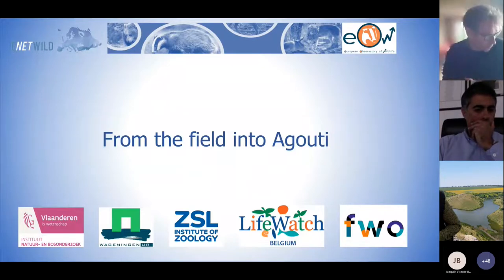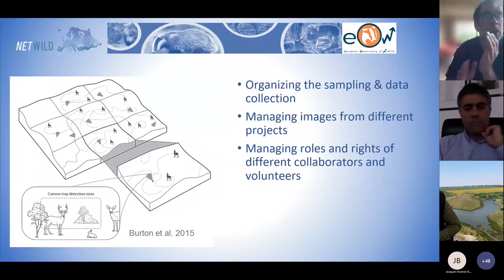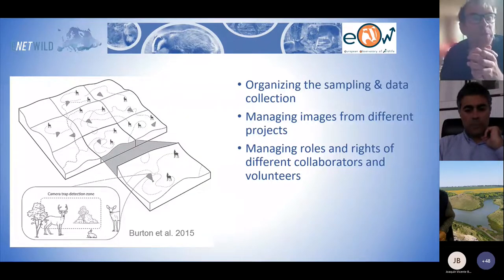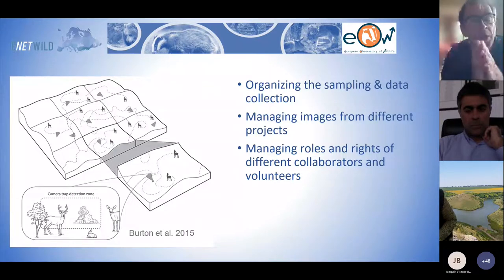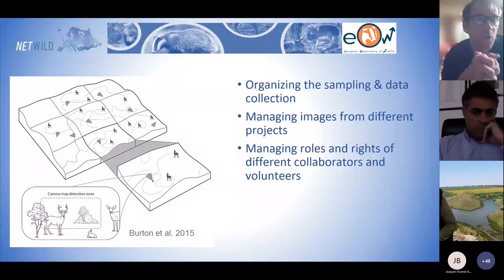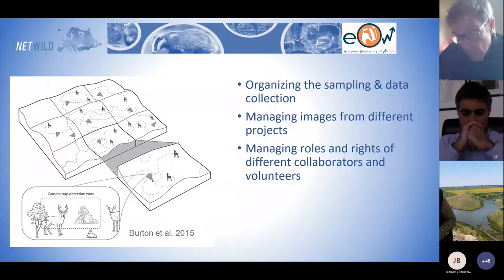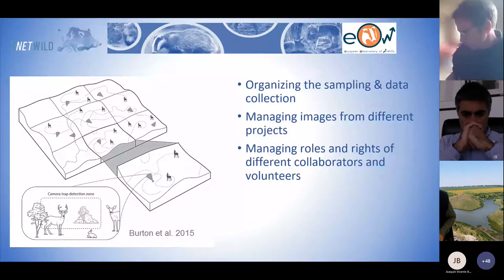The first step is to get from the field, from the camera fields, into Aguti. We have camera traps in the field used in a certain sampling design. We take a lot of pictures and, although it seems easy at first, it's quite a burden to organize: Where are the cameras? Which images belong to which camera? Which camera was in the field, from which day to which date? And in bigger projects, working with many field people, it's important to manage who is allowed to do what — who can upload images, who can tag images — without risking that you lose all the data.